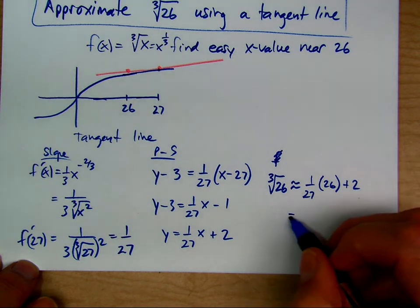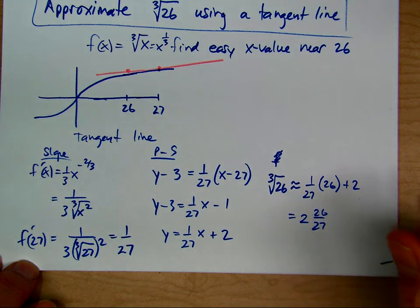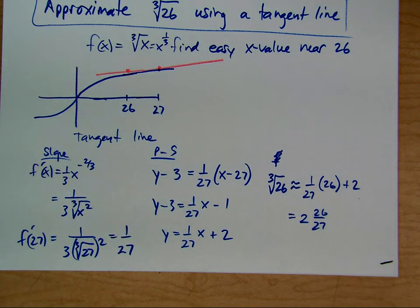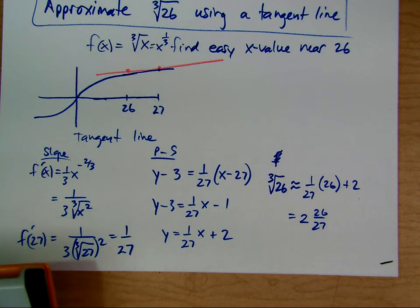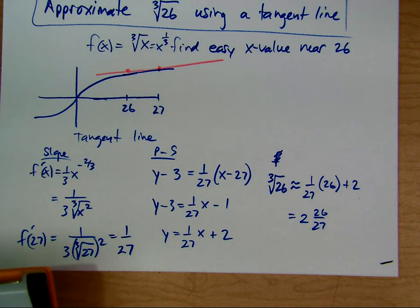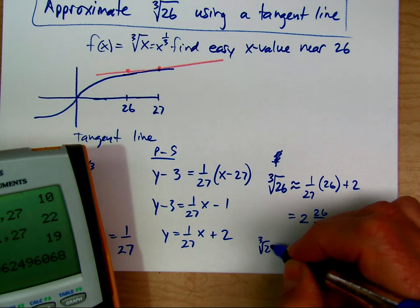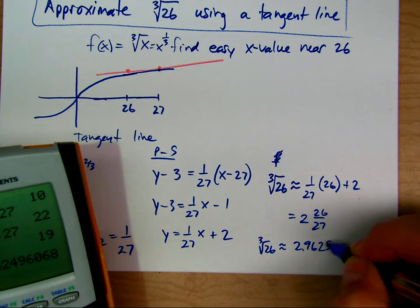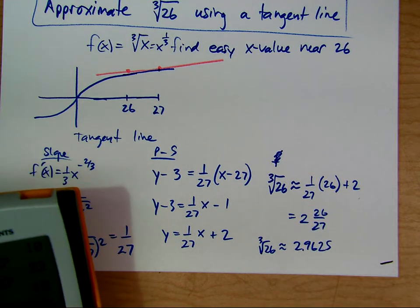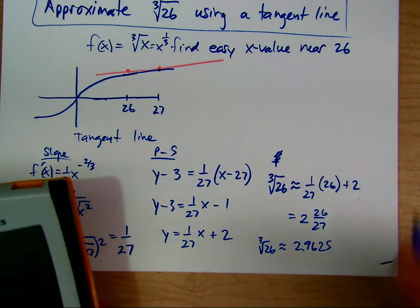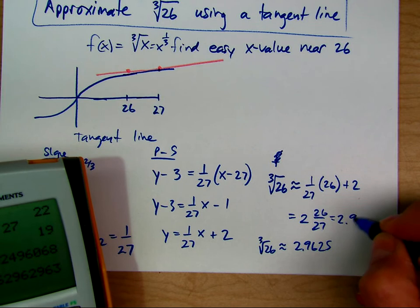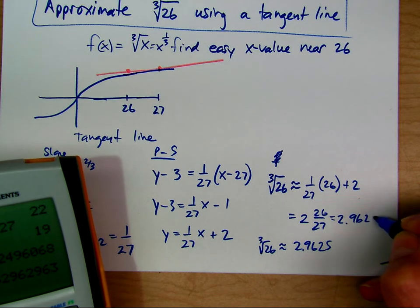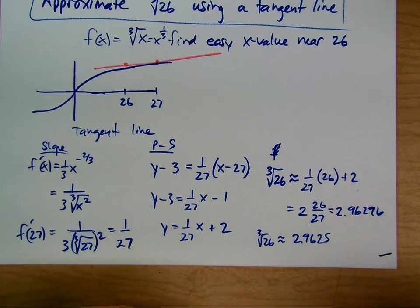That gives us 2 and 26 over 27ths. From a calculator, the cube root of 26 is 2.9625, and our approximation is 2.96296. We can see that it's pretty close.